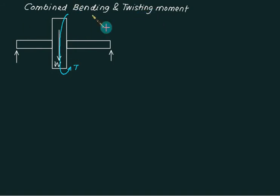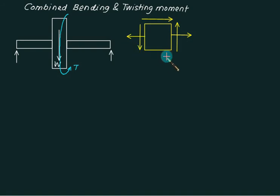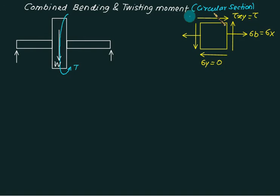Therefore the element will have two types of stresses: one is called bending stress and the other is shear stress, and the shear is complementary. The state of stress for this element has sigma_b (bending stress) and tau_xy (shear stress) as sigma_x. There is no stress acting in the y direction, so sigma_y equals zero. We will keep our discussion for circular sections.